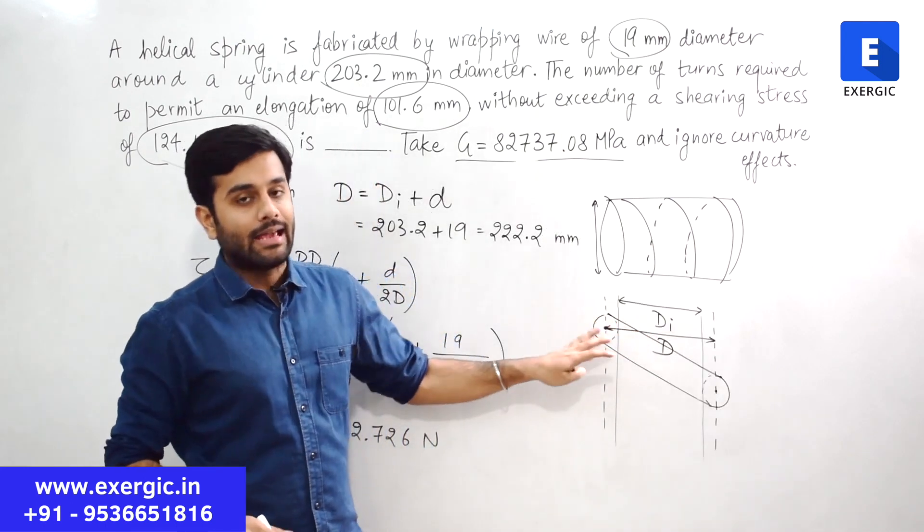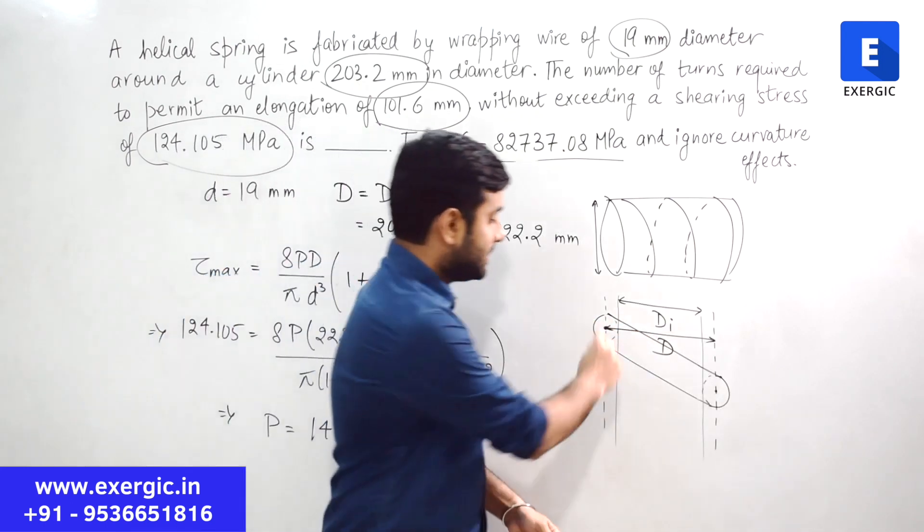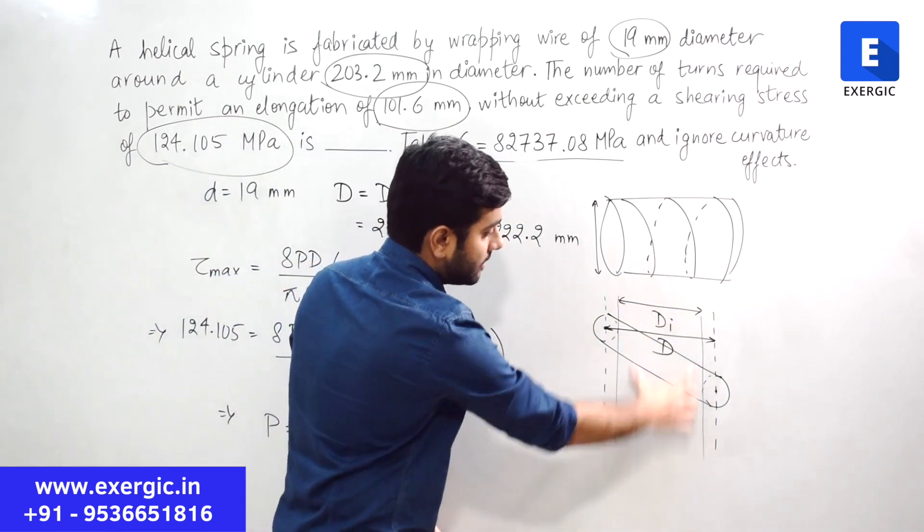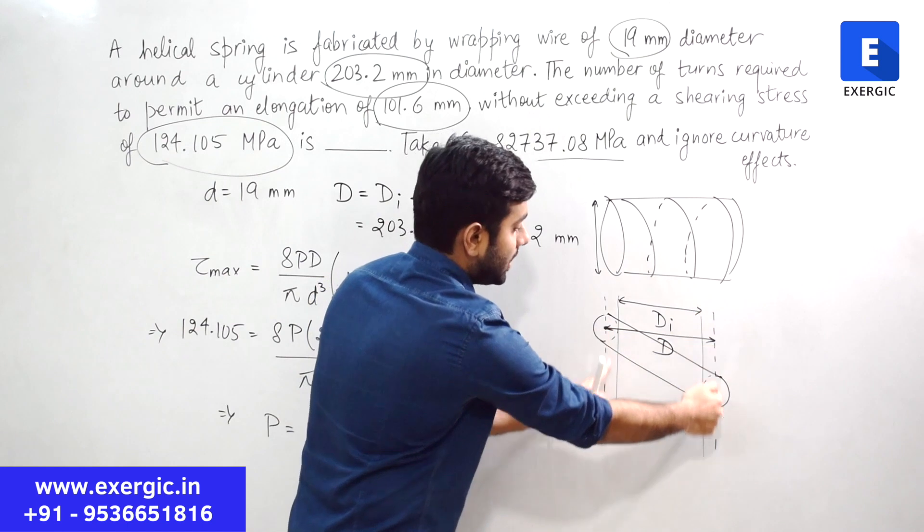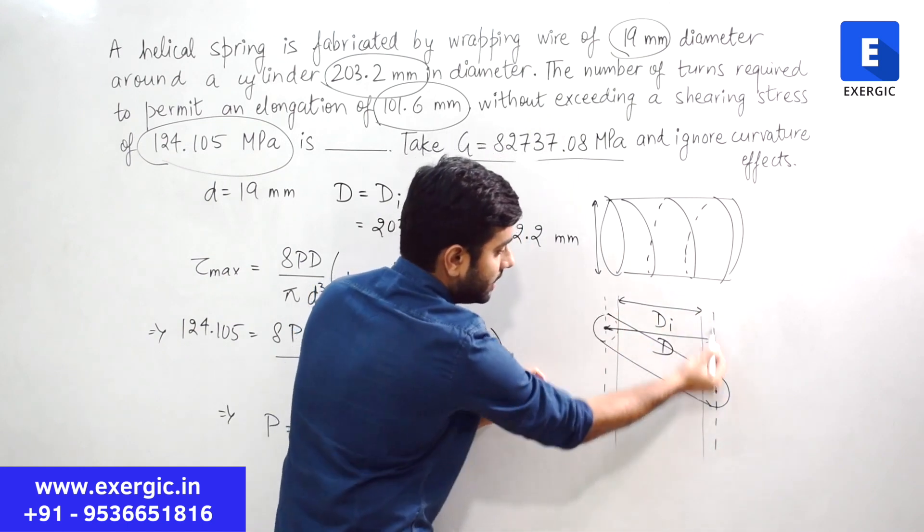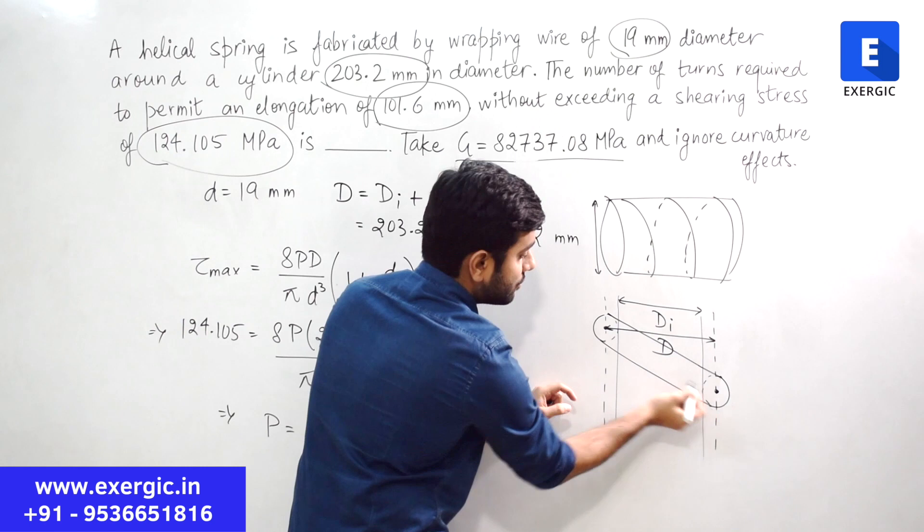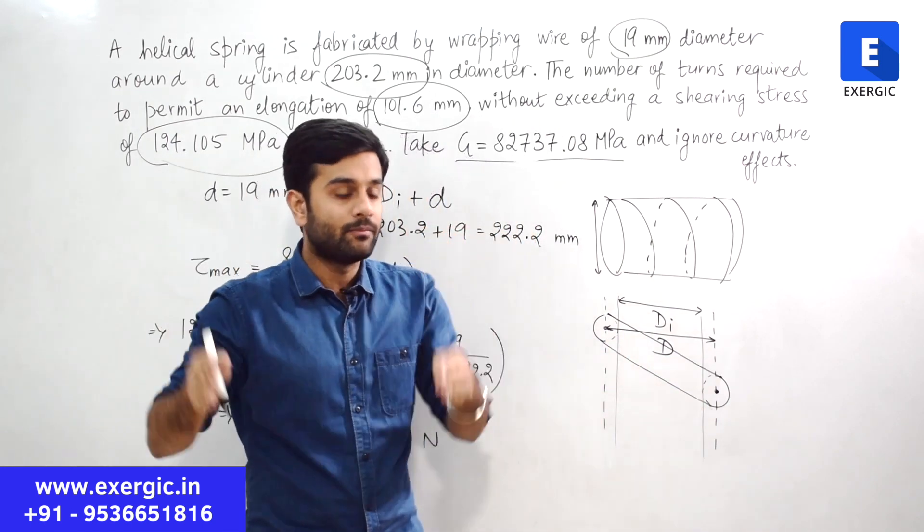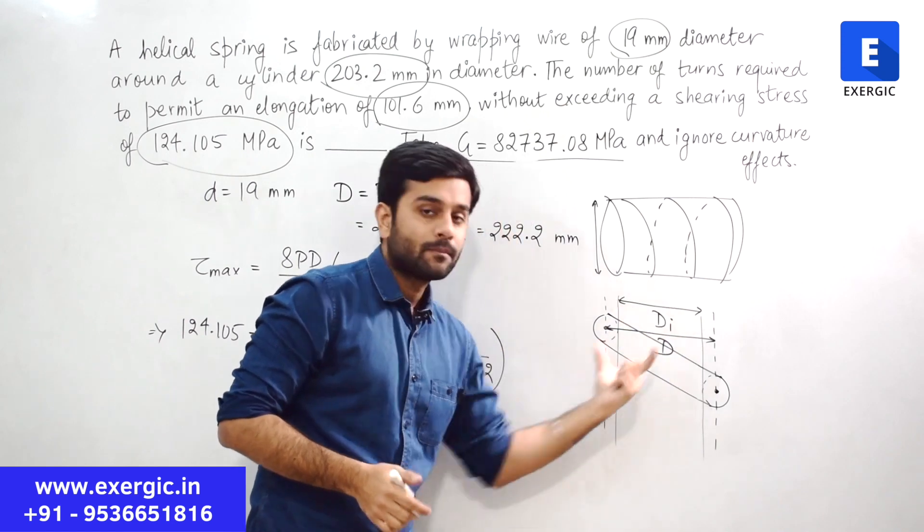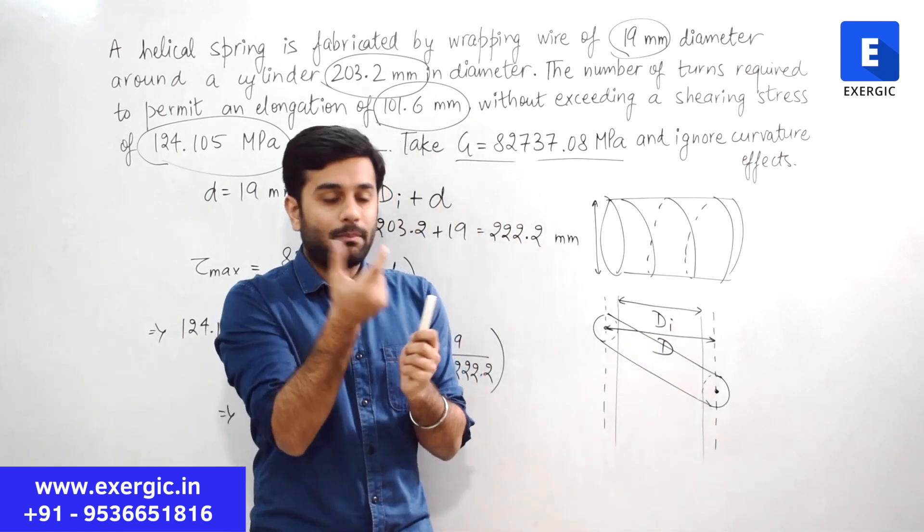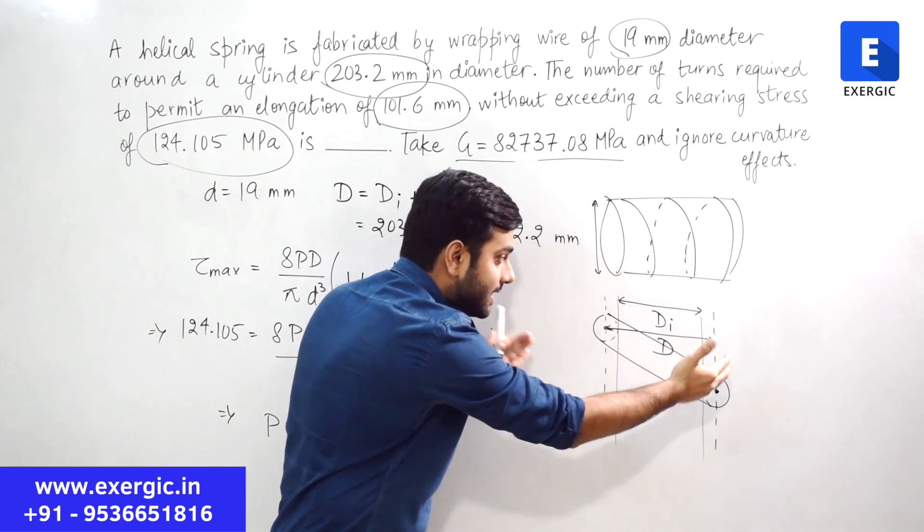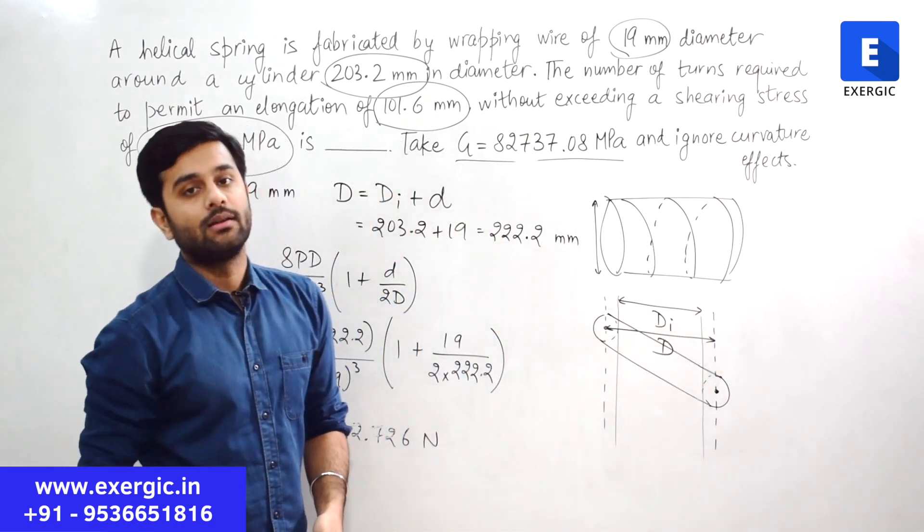So if you look at this diagram here, this is one coil that I have shown. This is the inner diameter. This is the mean coil diameter. This one which is shown using dotted line is the mean coil diameter passing through the center of both of the coils at each end. This is the inner diameter.